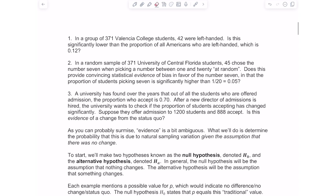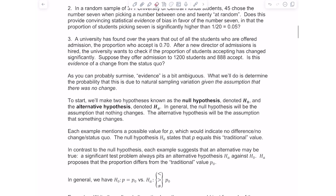The word evidence is a bit ambiguous, and what we're going to do is determine the probability that this is due to natural sampling variation, given the assumption that there was no change. In order to do this, we're going to start with two hypotheses.